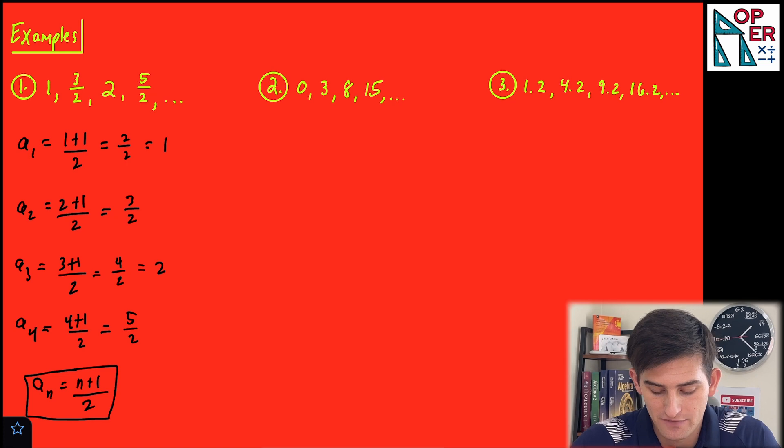All right, look at number two. So for two, we have 0, 3, 8, 15. Well, if you notice those numbers, they're really close to some perfect squares, right? What if that said 1, 4, 9, 16?